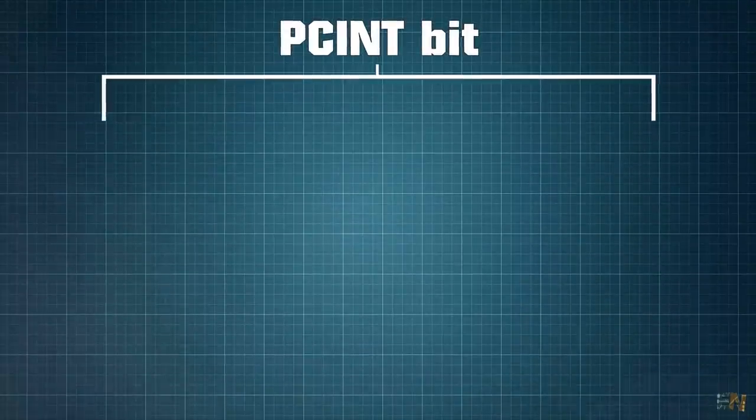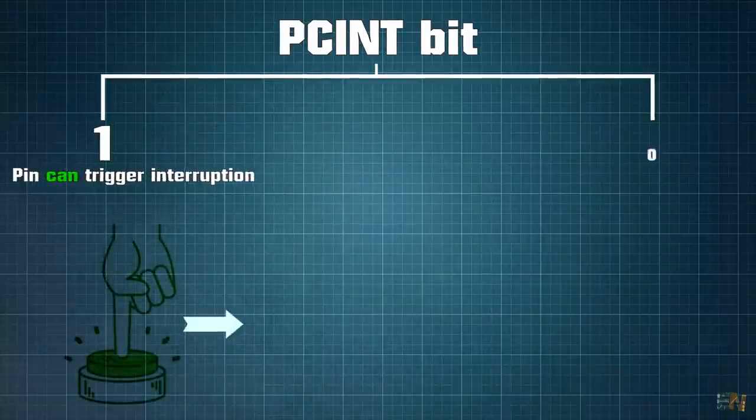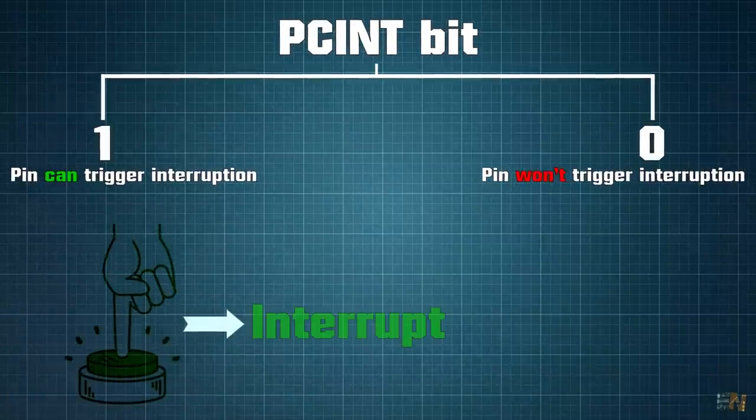Using PCINT, if activated, each time an input changes its value from high to low or from low to high, an interruption will be triggered.